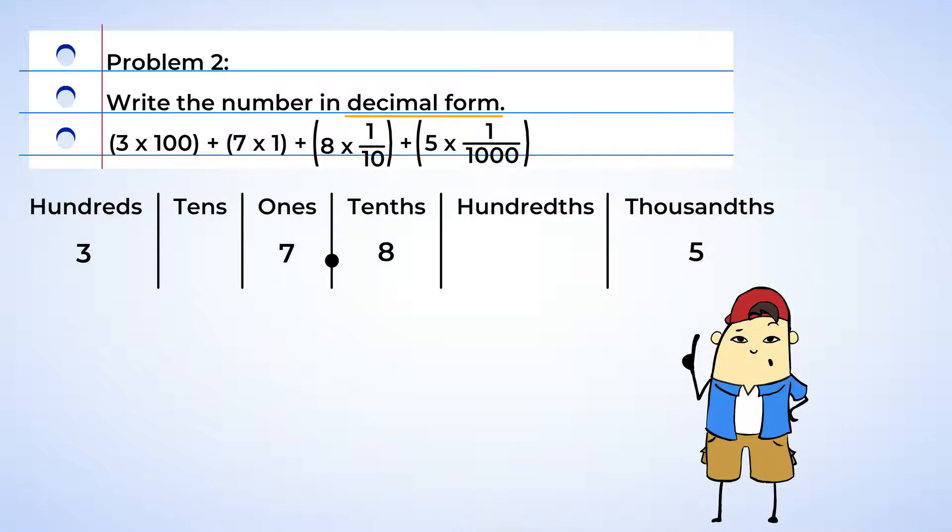Oh, wait a minute. Our place value table has blanks in it. Oh, I know. We can use zeros as placeholders. Oh, right. There we go. Now we can write the number. Okay, we have the number three hundred seven and eight hundred five thousandths. Great job!